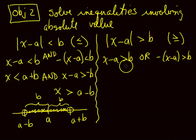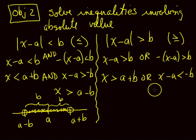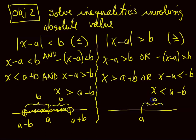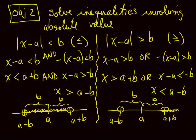For the greater than case: X minus A is greater than B gives X greater than A plus B. For the opposite case, multiplying by negative 1 gives X minus A less than negative B, then adding A gives X less than A minus B. On the number line, measuring right and left by B from A gives A plus B and A minus B. Because it's strictly greater than, we don't include those points. So X is greater than A plus B OR X is less than A minus B. OR is important here — you can't be both places at the same time.